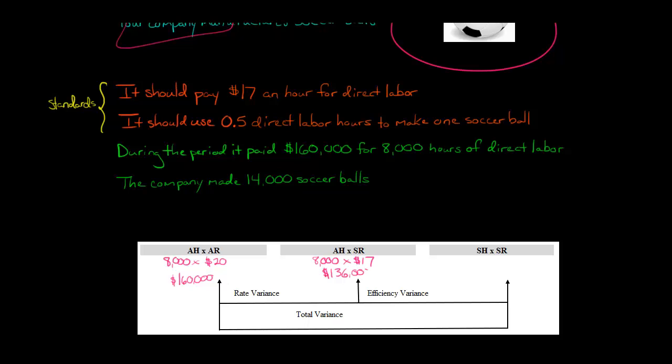So now what we do is we look at the difference between the 160,000 and the 136. We see that it is $24,000. That is our rate variance.